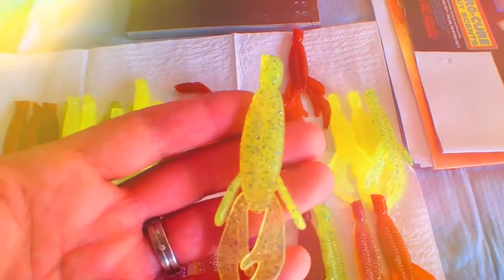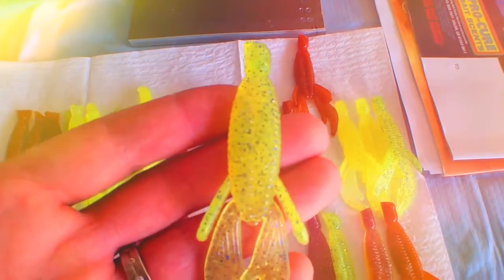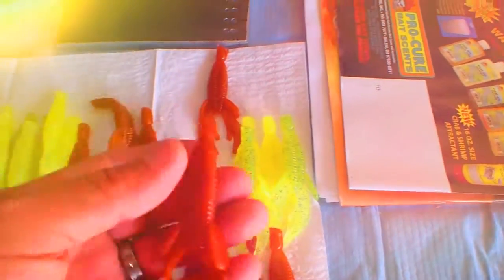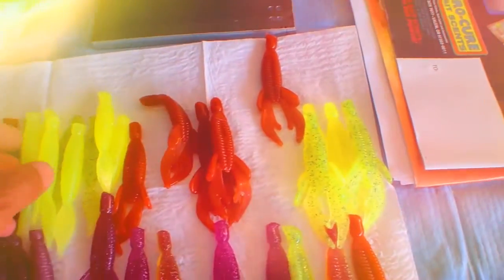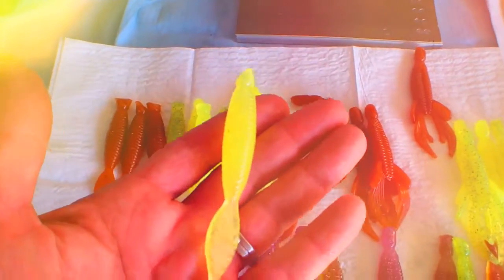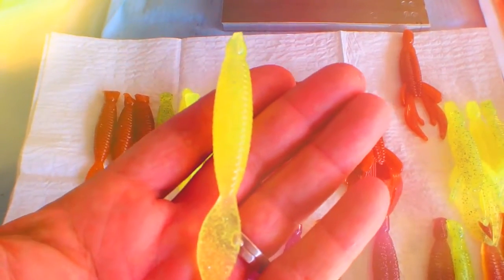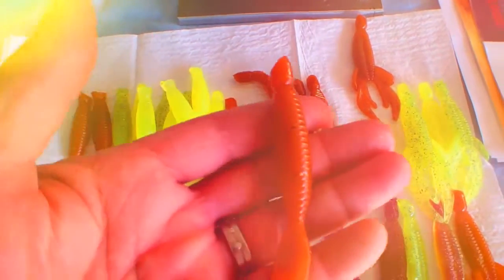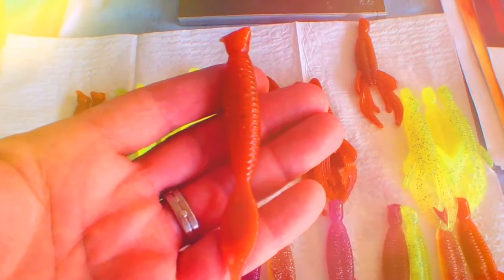I made some crawdads with purple flakes in it. Pumpkin seed crawdad. Chartreuse stingray grub. Also made pumpkin seed.